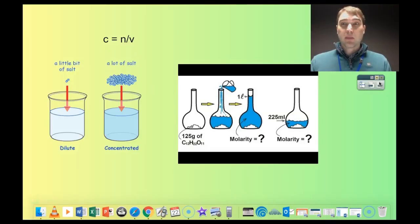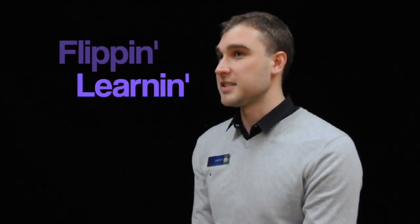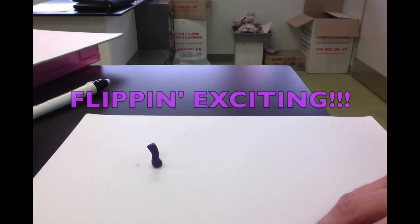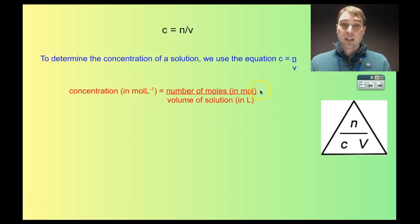In Flipping Science we're looking at the C equals N on V formula. We use it when we're trying to find the concentration of a solution. The concentration in moles per litre is found by dividing the number of moles of solute by the volume of the solution. We need to make sure we get the units right — the number of moles in moles and the volume of solution in litres.